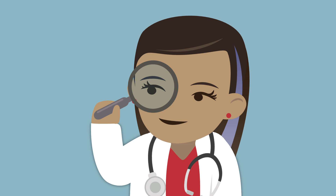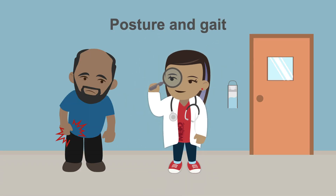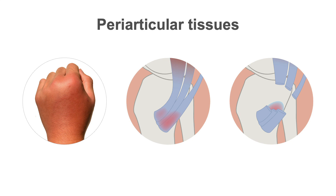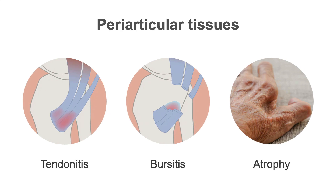During general inspection, pay attention to how the patient looks. If they are in distress due to pain, look at their posture — they may be guarding a joint or holding it with their hands. Check their gait to see if they are limping or have other types of abnormal walking. When inspecting the affected joint, don't ignore the periarticular tissues, where you can pick up clues for conditions such as cellulitis, tendonitis, bursitis, muscle atrophy, and nail disease.